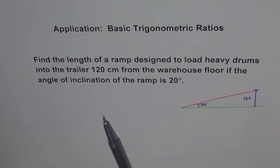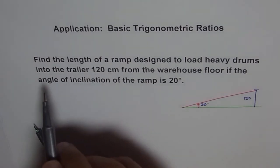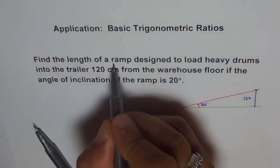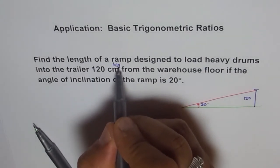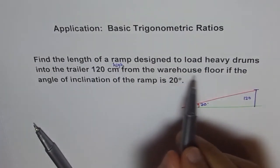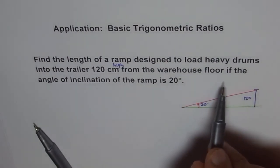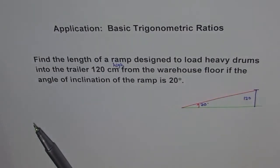So in this case, to make it very clear: heavy drums into the trailer 120 cm high. Let me write the word 'high' here. From the warehouse floor. So the height is given to us as 120 cm from the floor. See, it's very difficult to lift the drums and put them in, so with the ramp you can roll them. That's the whole idea.